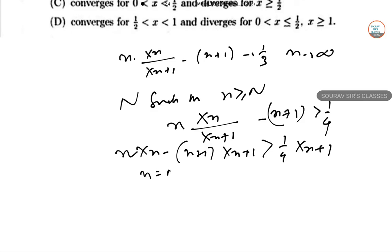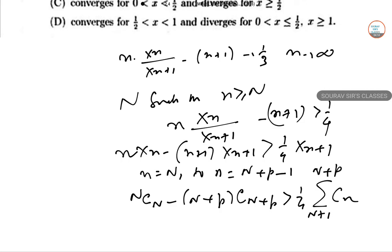Taking the sum from n equals N to n equals N+p-1, we can see that n·cN minus (n+p)·c(n+p) is greater than 1/4 times the summation from n+1 to n+p.